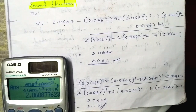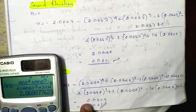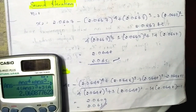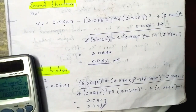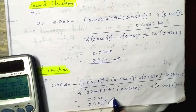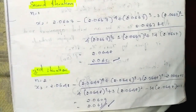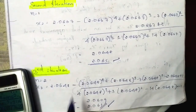The third iteration gives 2.0609, which rounds to 2.061. The third iteration value has been obtained.